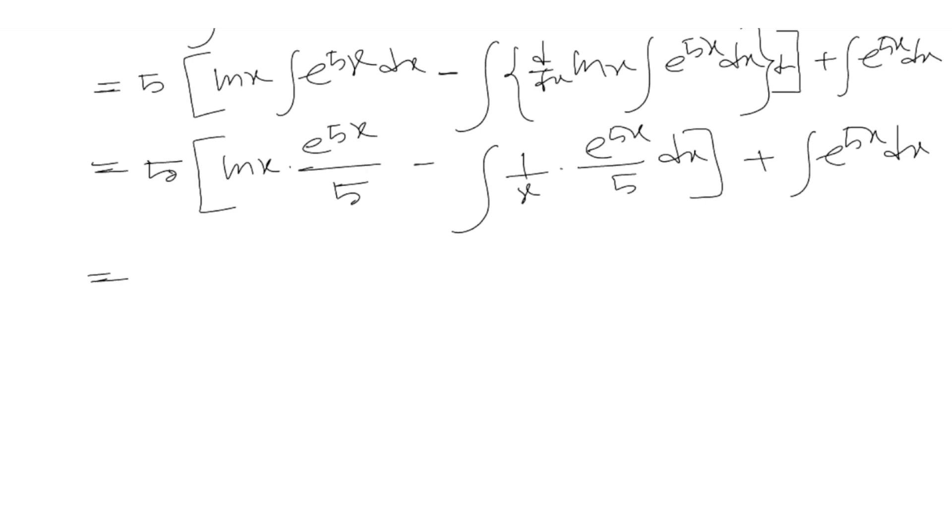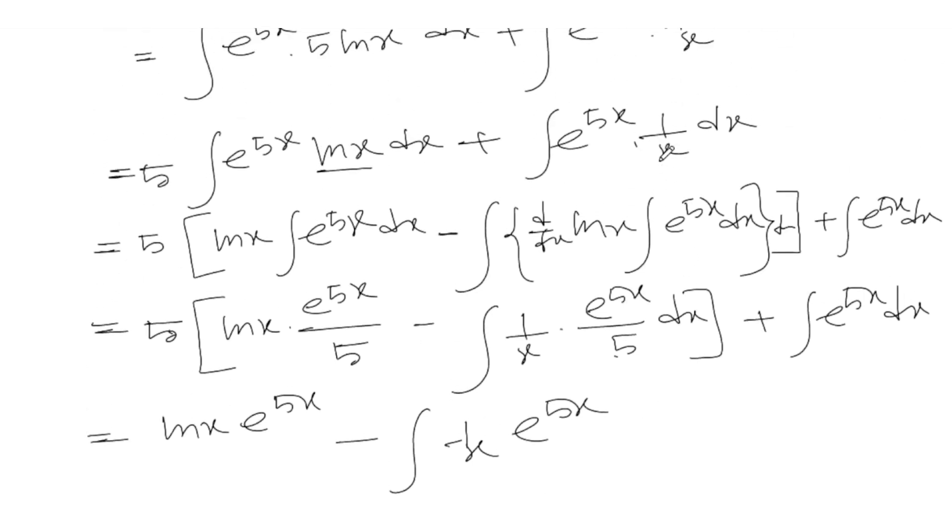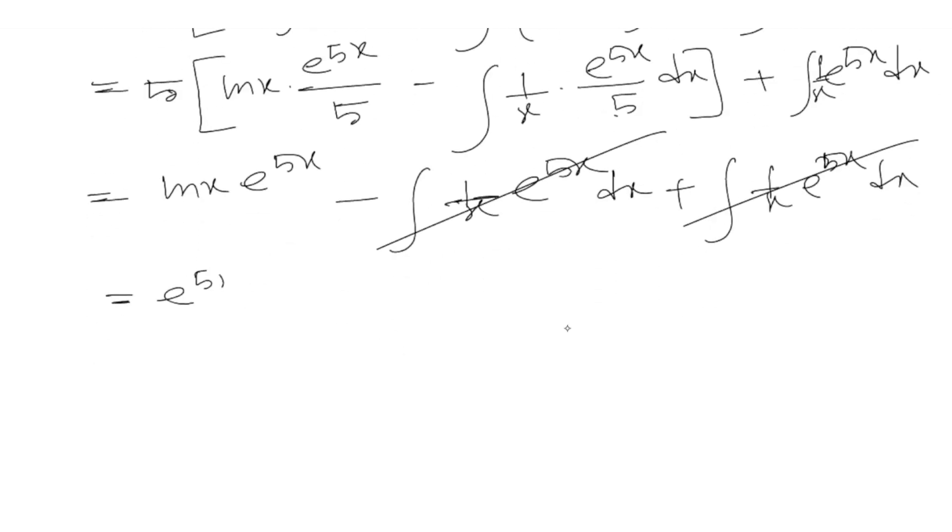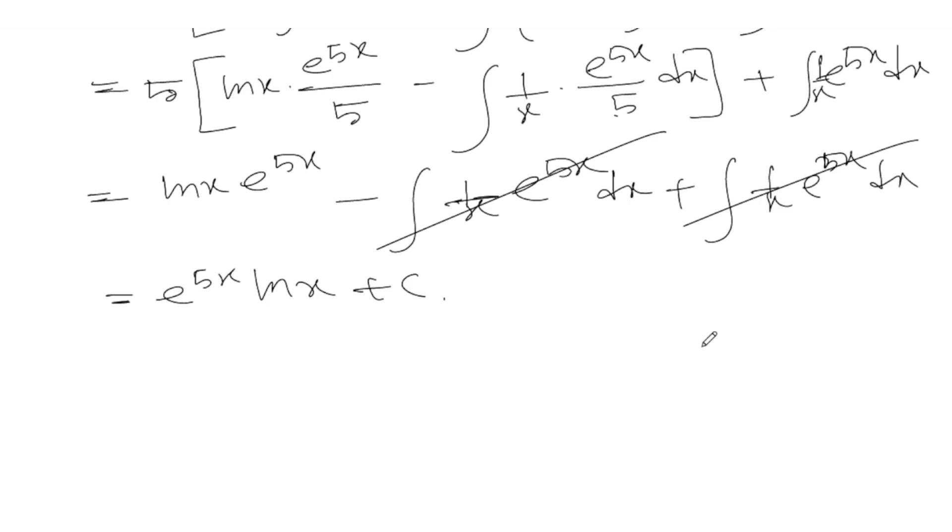Continuing: ln(x) times e^(5x) minus the integral of 1/x times e^(5x) dx. Since the integral of 1/x times e^(5x) appears on both sides, we can solve for it. The final answer is e^(5x) times ln(x) plus C.